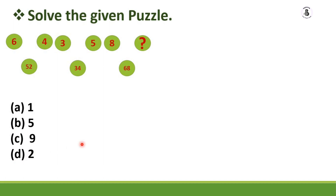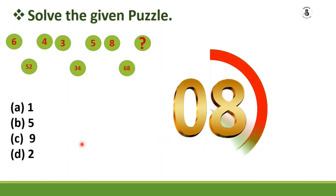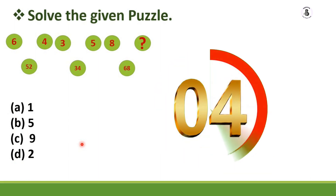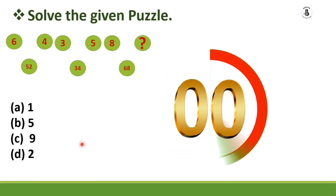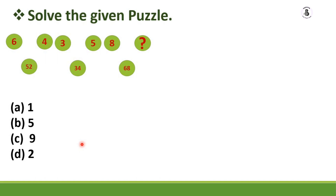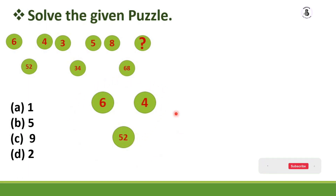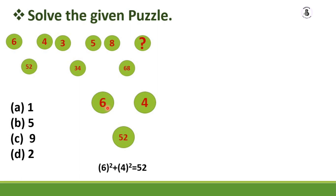I will give you 10 seconds to solve the problem. For solving this, take the first triangle values: 6, 4, 52. You have to make the relation between these three numbers. Subtraction, addition, and multiplication won't get you 52. Think about using the square values of the two numbers: 6 squared plus 4 squared equals 36 plus 16, which gives you 52.